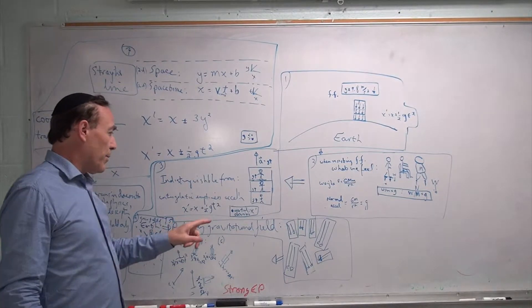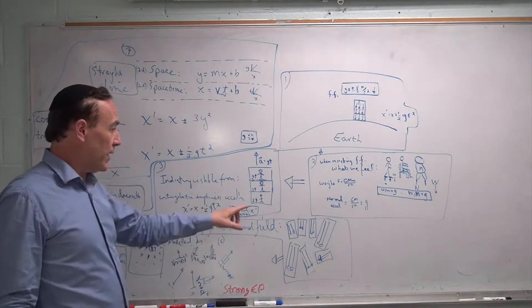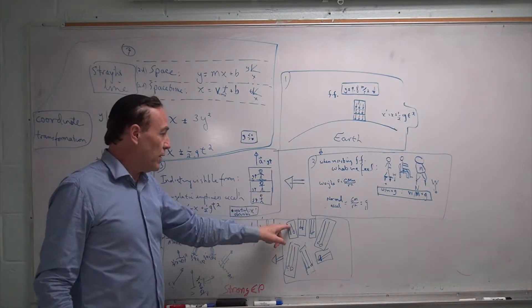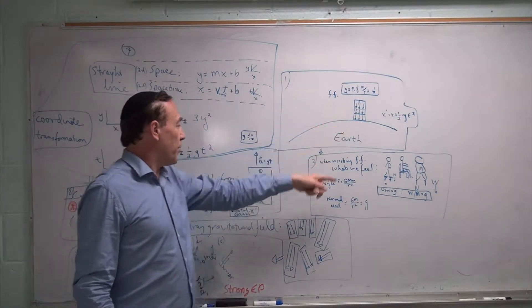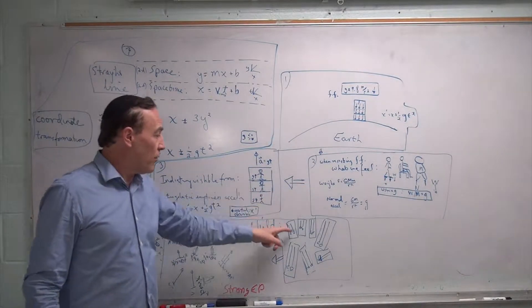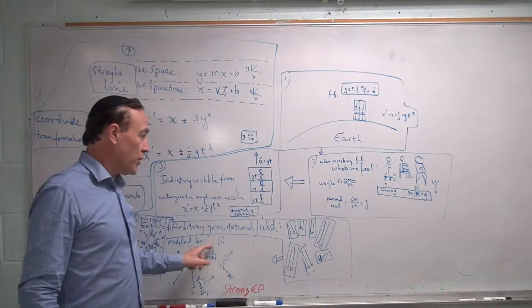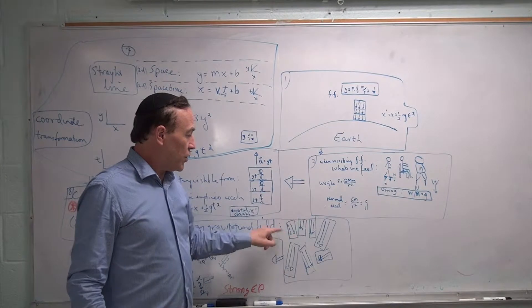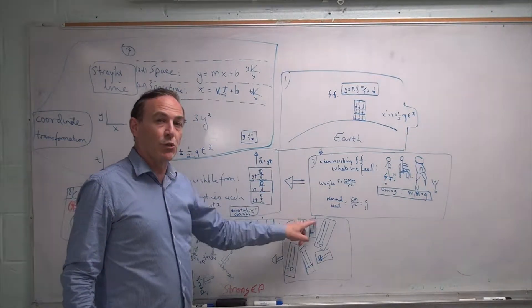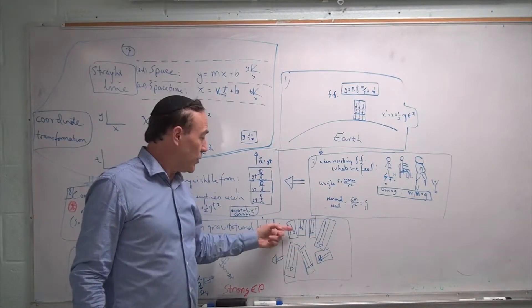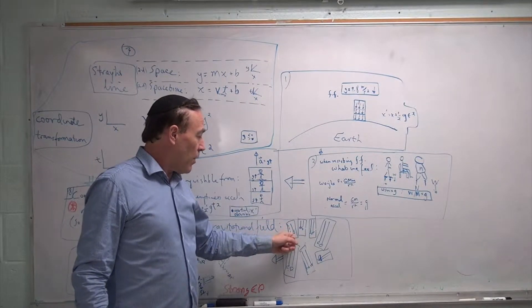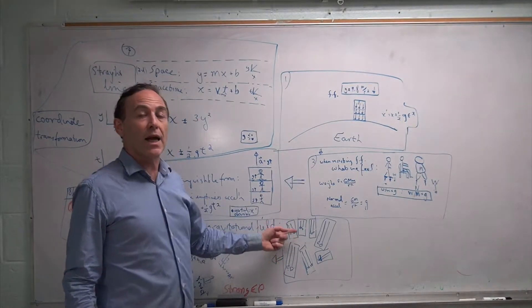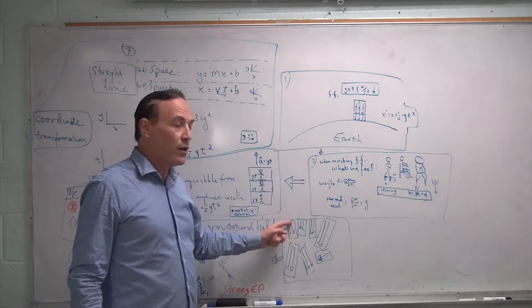So we'll model any gravitational field by a collection — a very large collection, maybe even an infinite collection of tiny or infinitesimal regions — in each of which we can consider the field to be uniform. That's any gravitational field: a collection of uniform fields. Since we can model any one building with a rocket, we can model this collection with a collection of rockets. Each region has its own uniform field, and in each region we can model it by an acceleration. An acceleration in this region would produce exactly the same phenomena as would be measured in this building.